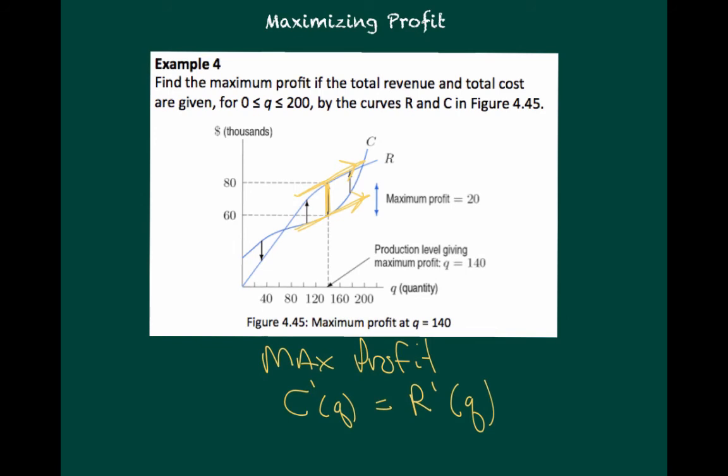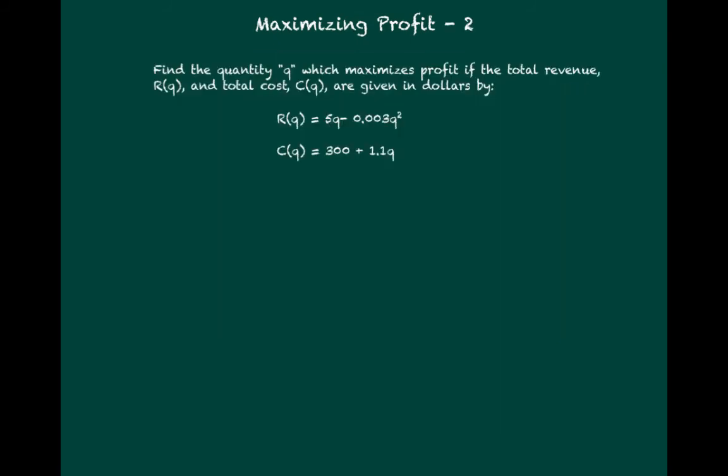Let's take one more look at an example that we are given the revenue function and given the cost function, and let's determine what should be the quantity that's going to maximize our profits. Let's find the quantity q, which maximizes profit. If we know that the total revenue, R(q), and the total cost, C(q), are given in dollars by these functions.